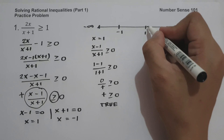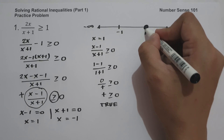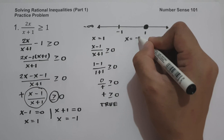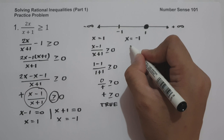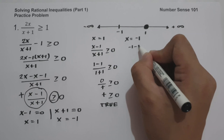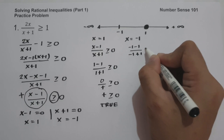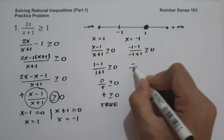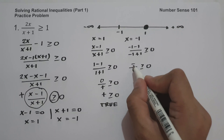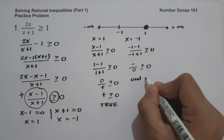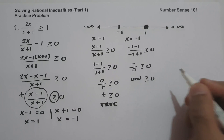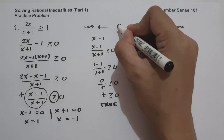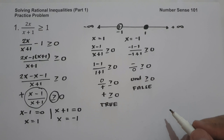Since 0 is greater than or equal to 0, that is true, so 1 is included in our solution — I'll use a shaded circle. Now let's test x equals negative 1: negative 1 minus 1 over negative 1 plus 1 gives negative divided by 0, which is undefined. Undefined is not greater than or equal to 0, so this is false. I'll use an open circle for negative 1, meaning it is not included in our solution.